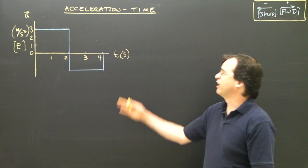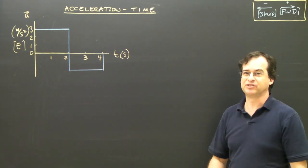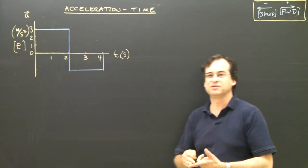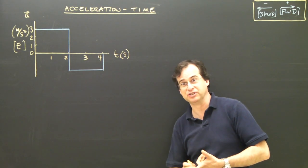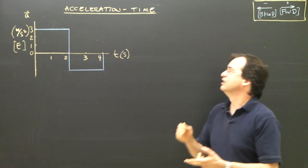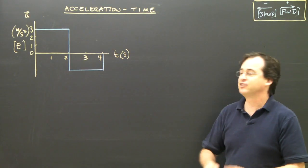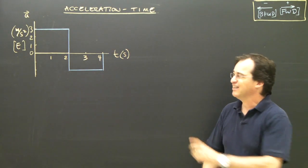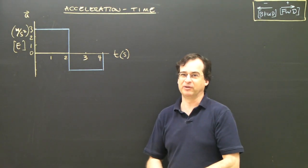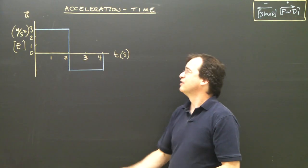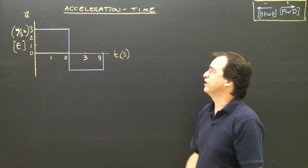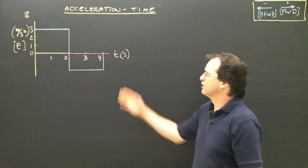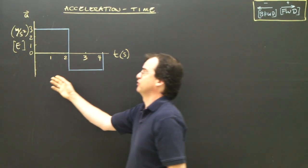The last graph we need to look at is the acceleration-time graph. We looked at displacement-time graphs or position-time graphs, velocity-time graphs, and now acceleration-time graphs. There's not a whole lot we do with acceleration-time graphs — the main thing we do is find the area. But let's look at the graph first.